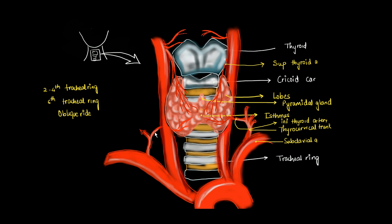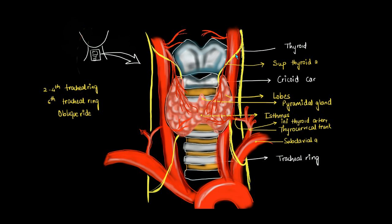The thyroid gland is richly vascular. An important consideration is how the blood supply comes close to very important nerves in the larynx. Here we have the vagus nerve, and this is the external laryngeal branch of the vagus nerve. The external laryngeal nerve comes very close to the superior thyroid artery away from the gland, but there is more distance between them as we go closer to the gland.